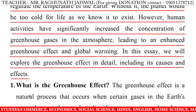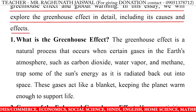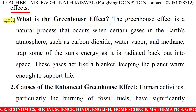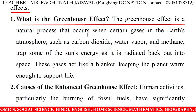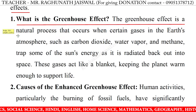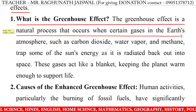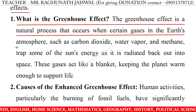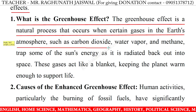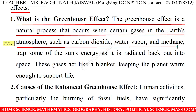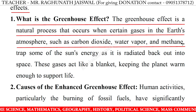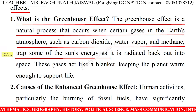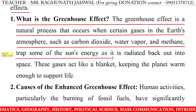What is the greenhouse effect? The greenhouse effect is a natural process that occurs when certain gases in the earth's atmosphere — such as carbon dioxide, water vapor, and methane — trap some of the Sun's energy as it is radiated back out into space.